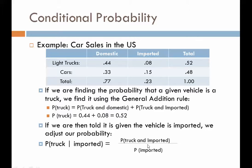We divide by the probability that it's imported. The ratio of these two, doing the division, gives us 35%. So there's a 35% probability that if we know ahead of time it's imported, it would be a truck. In other words, 35% of the imported vehicles are trucks.